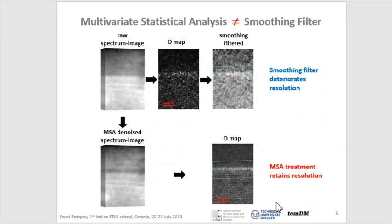MSA is also different from a simple smoothing filter. Smoothing can sometimes improve our data — say, reduce noise — but it's always accompanied with loss of spatial resolution, like in this image. In contrast, MSA is able to denoise your data without losing its spatial resolution. How it works, you will see later.